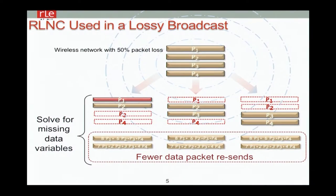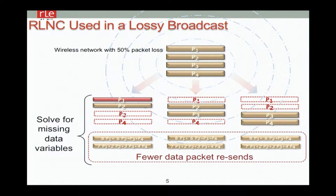One of the first things you can do is use it just as an old-fashioned end-to-end erasure code. Here are three receivers, one on each column — the dashed packets are the ones that are missing. You need fewer packet resends compared to something like an ARQ. In this case, each packet is missing for at least one receiver, so a simple solution is to send two random combinations of the four packets. Each receiver now has four equations, four unknowns, and can solve.